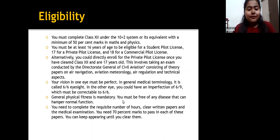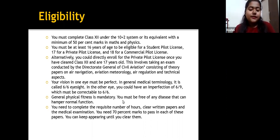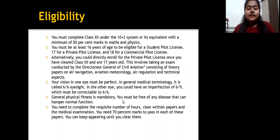This involves taking an exam conducted by the Directorate General of Civil Aviation, consisting of theory papers on air navigation, aviation meteorology, air regulation, and technical aspects. Your vision in one eye must be perfect — 6x6 eyesight in medical terminology. In the other eye, you could have an imperfection of 6x9, which must be correctable to 6x6. General physical fitness is mandatory; you must be free of any disease that can hamper normal function. You need to complete the requisite number of flying hours, clear written papers, and the medical examination, with 70% marks required to pass each paper. You can keep appearing until you clear them.